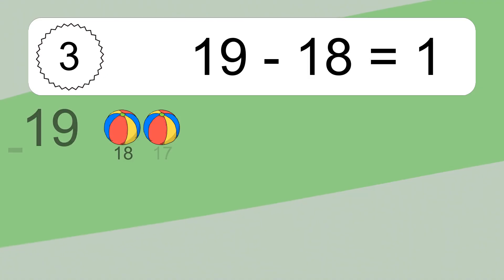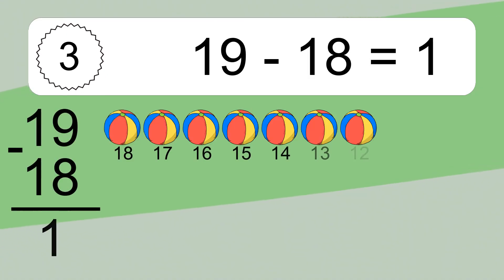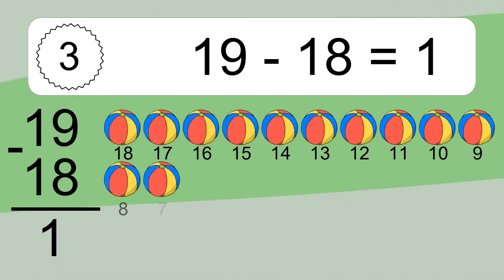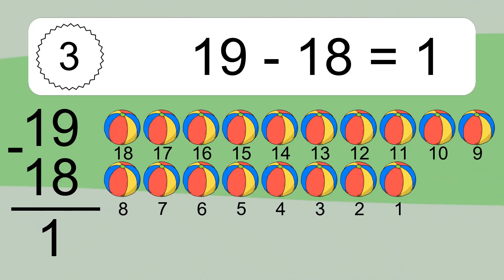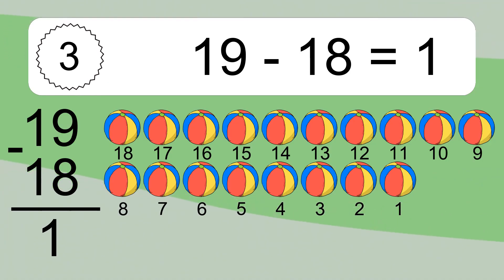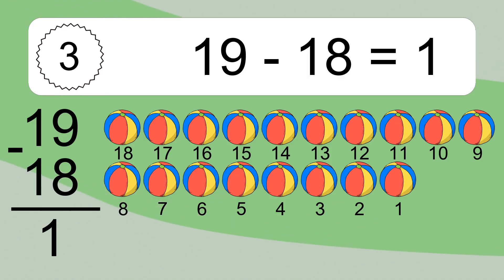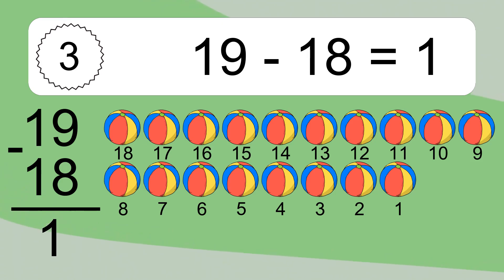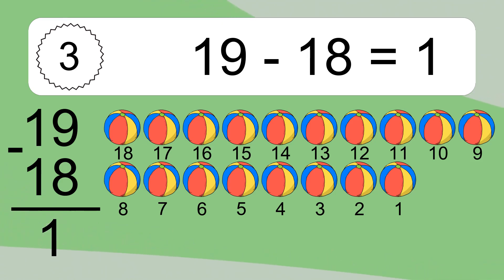Nineteen minus eighteen equals what? 19 minus 18 equals one. Let's count it: 18, 17, 16, 15, 14, 13, 12, 11, 10, 9, 8, 7, 6, 5, 4, 3, 2, 1.